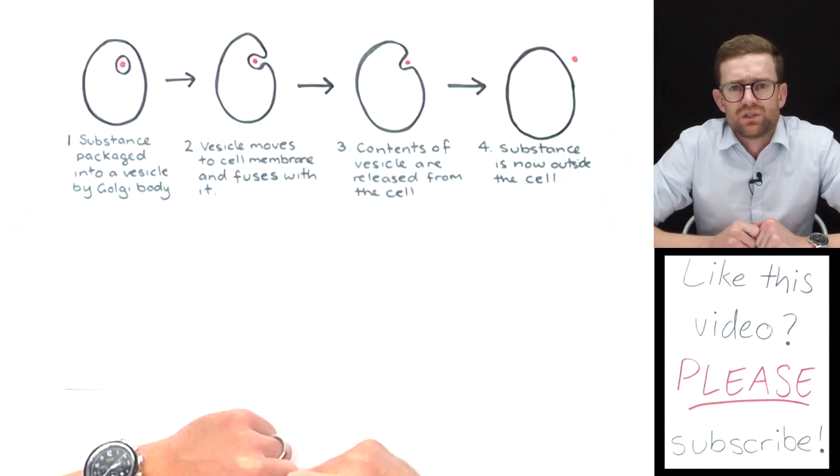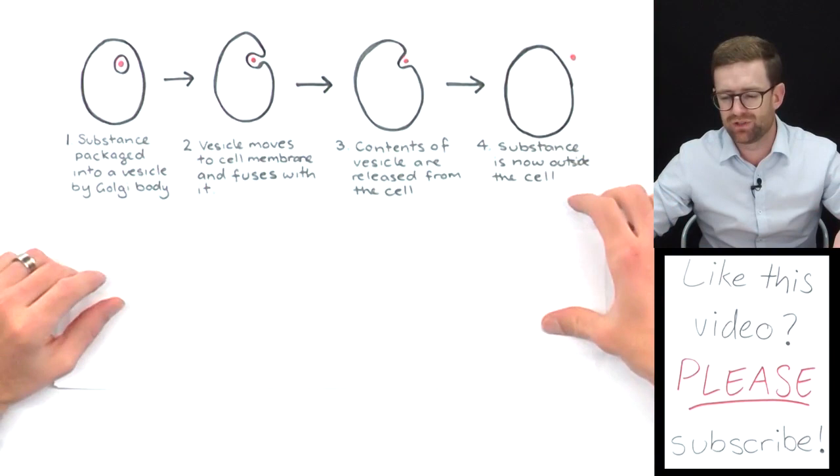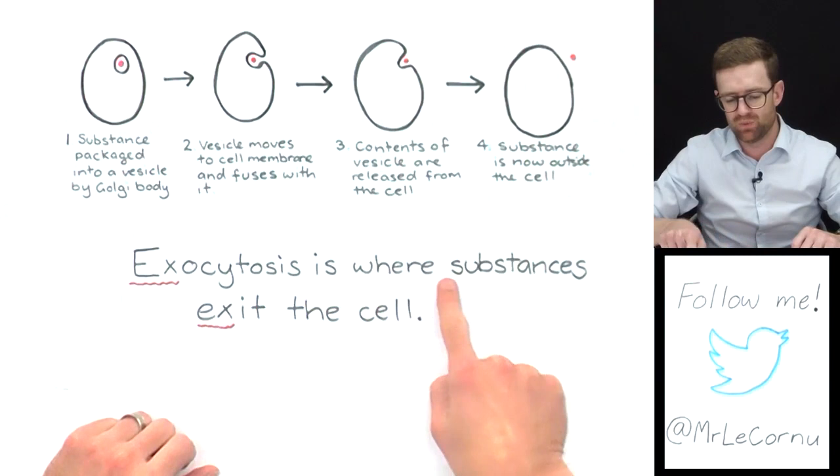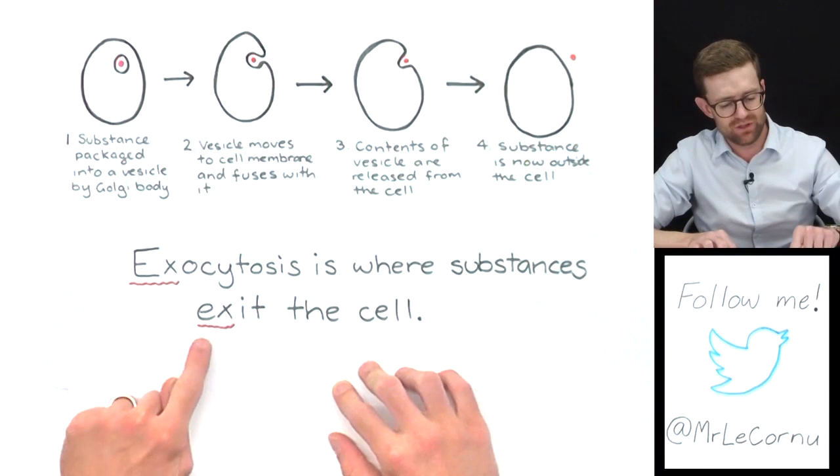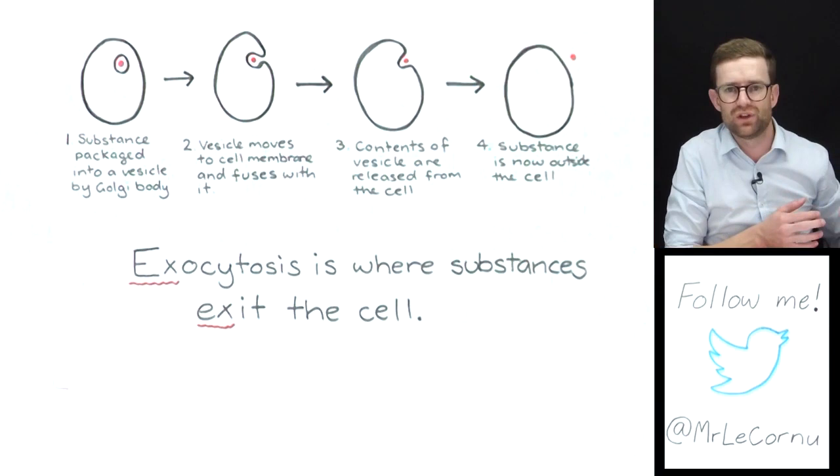A really handy way to remember exocytosis is by remembering that exocytosis is where substances exit the cell. It's the ex for me that helps me remember, just like with endocytosis where substances enter the cell, exocytosis is where substances exit.